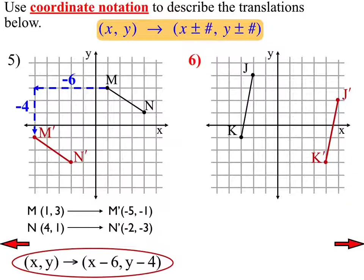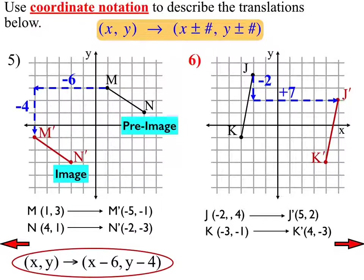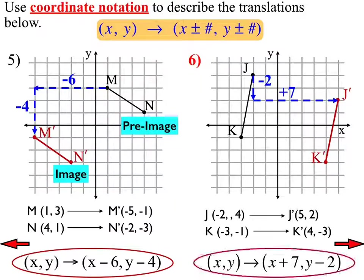Now do the same thing with number 6. In number 6, start at either J or K and figure out what you had to do to get to J prime or K prime. Going from J, 2 in the downward direction and 7 to the right, the coordinate rule is (x, y) → (x+7, y−2).